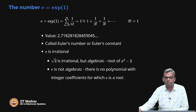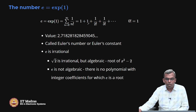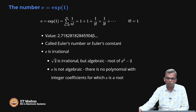If you write it down, it is 1 plus 1 plus 1 by 2 factorial plus 1 by 3 factorial plus dot dot dot. Remember the convention that 0 factorial is 1. The value of e, if you actually keep evaluating it — we know that this converges — comes to something like 2.71828182848459045 dot dot dot. It keeps on going, it never stops. So this is called Euler's number or Euler's constant.